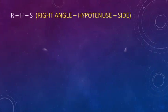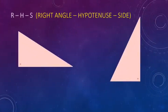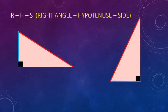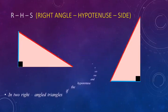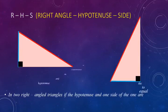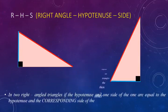The last one is RHS criteria. In two right-angled triangles, if their hypotenuses are equal and one of the other two sides are equal in length, then we can say that the triangles are congruent by RHS criteria.